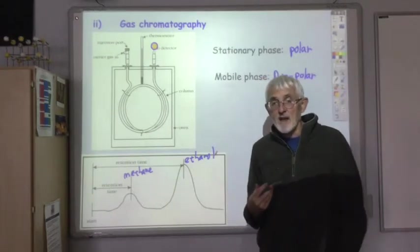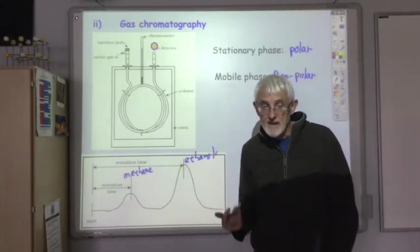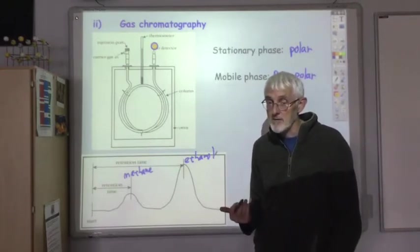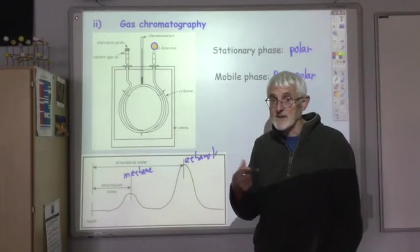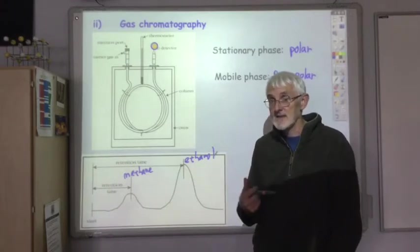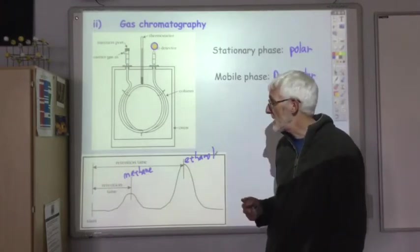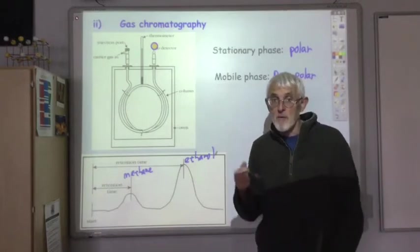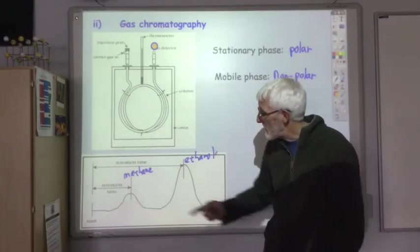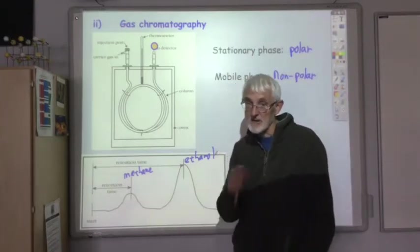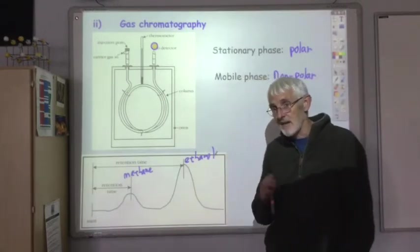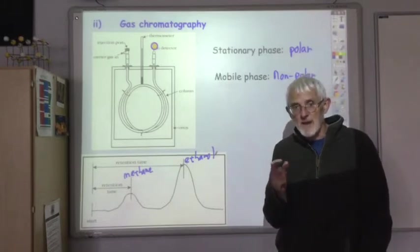Say it was a mixture of methane and ethane we're trying to separate. In that case, they're both non-polar. If the two substances have similar polarity, then it's the size of molecule that determines the retention time. Small molecules move faster than big molecules. So once again, if it was methane and ethane, the methane would come off first because it's a smaller molecule, so it travels faster. And ethane would come off later on because it's slightly bigger and so it takes a longer time to travel through the column.